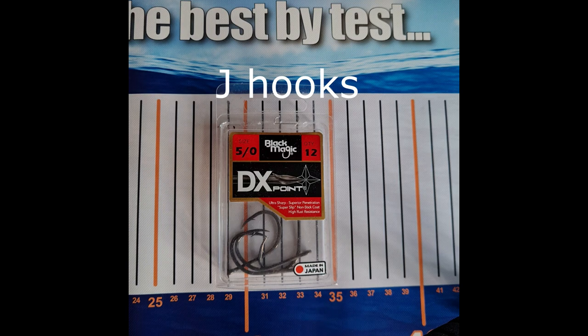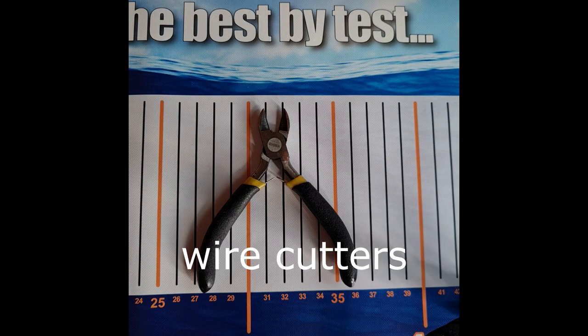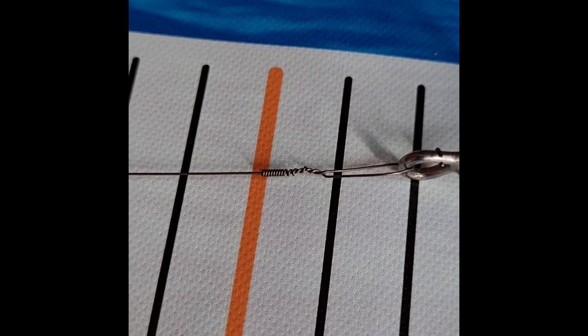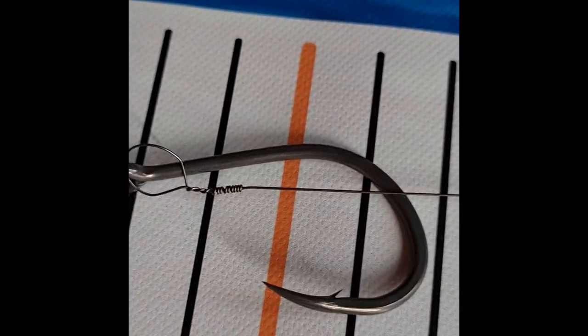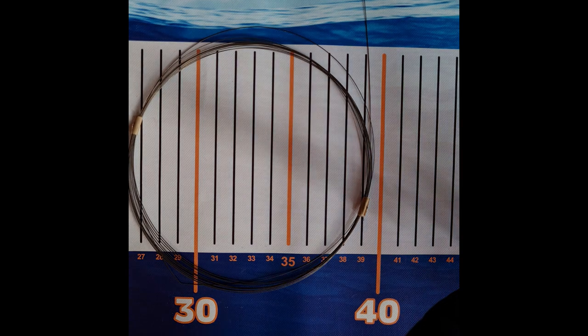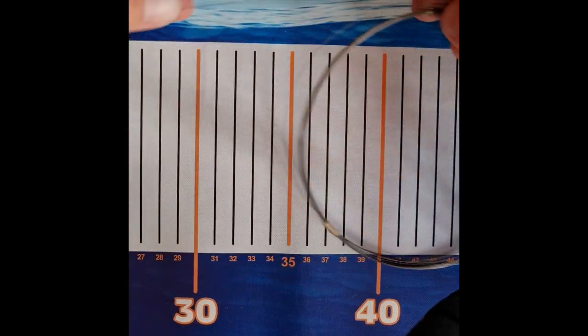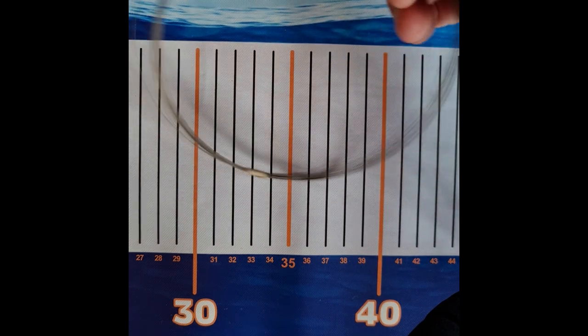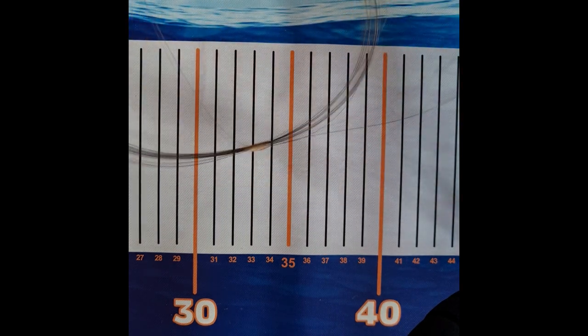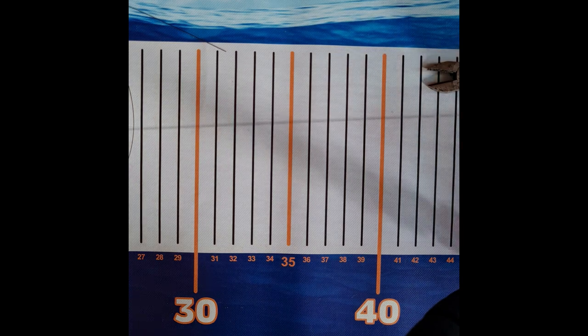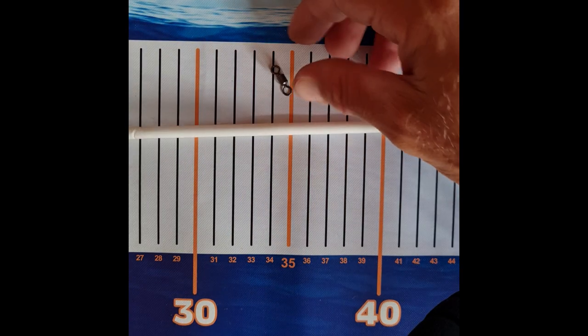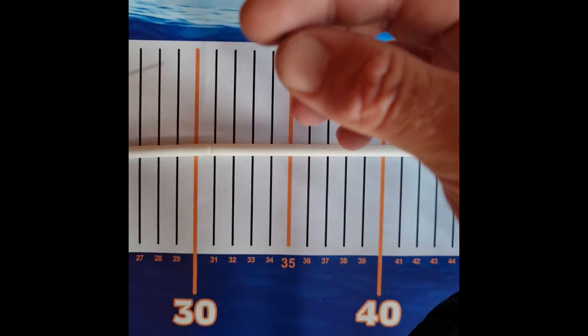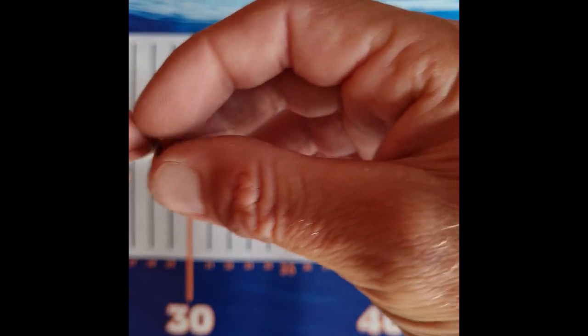So today I'm going to show you how to do the haywire twist. For the first step you're going to grab your wire and pull off about 30 to 35 cm. So there's my wire there. We just pop the swivel on like so.